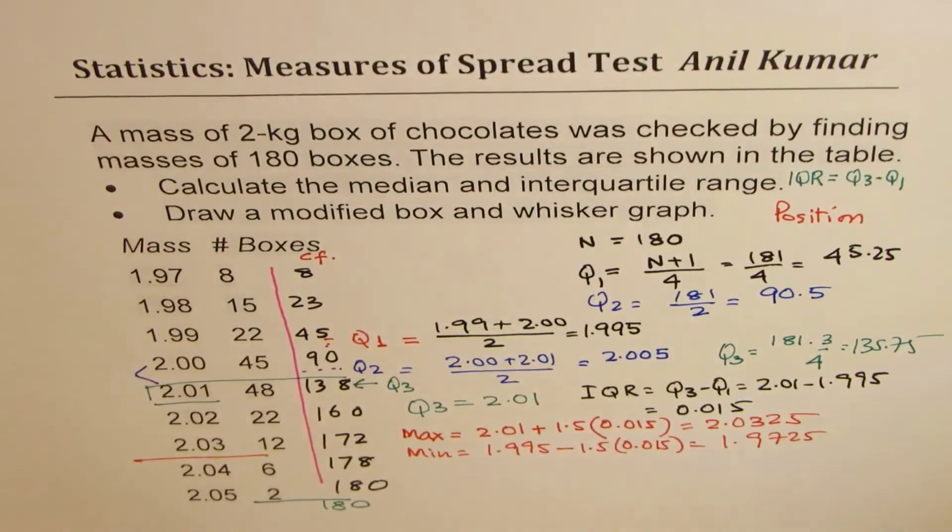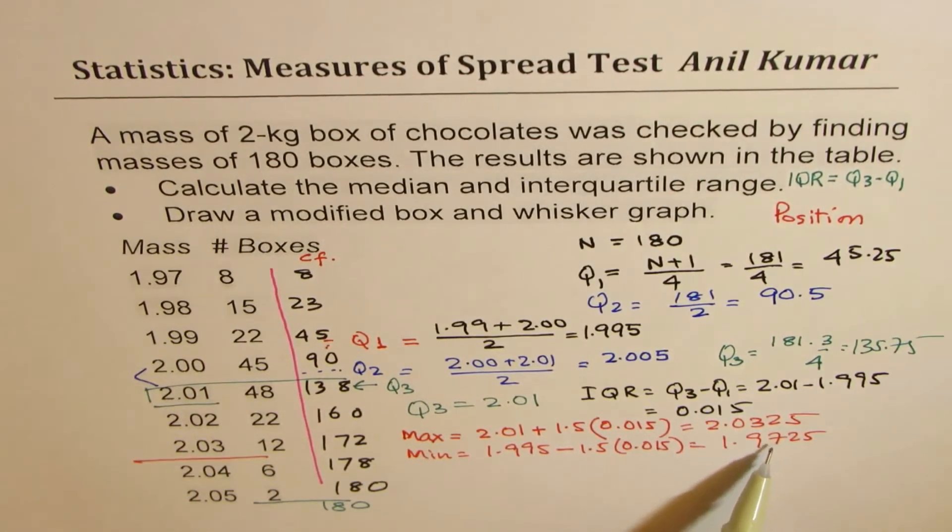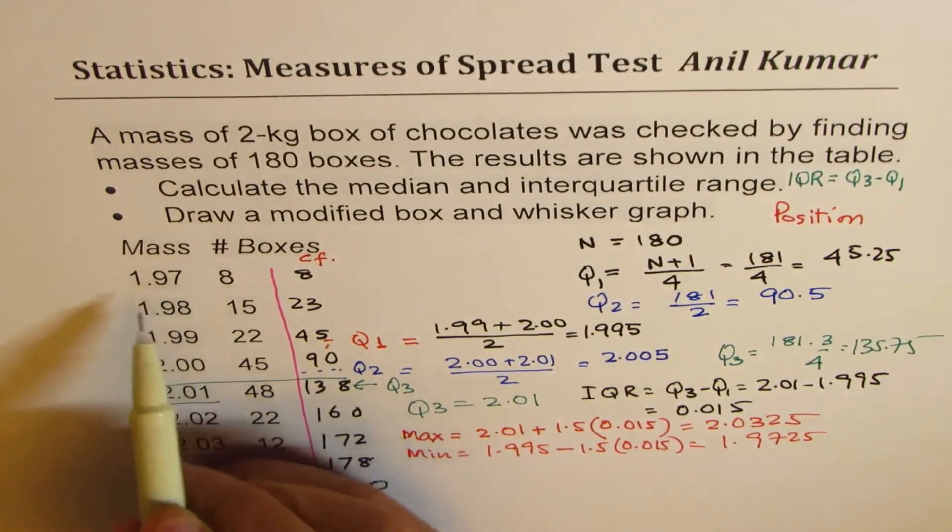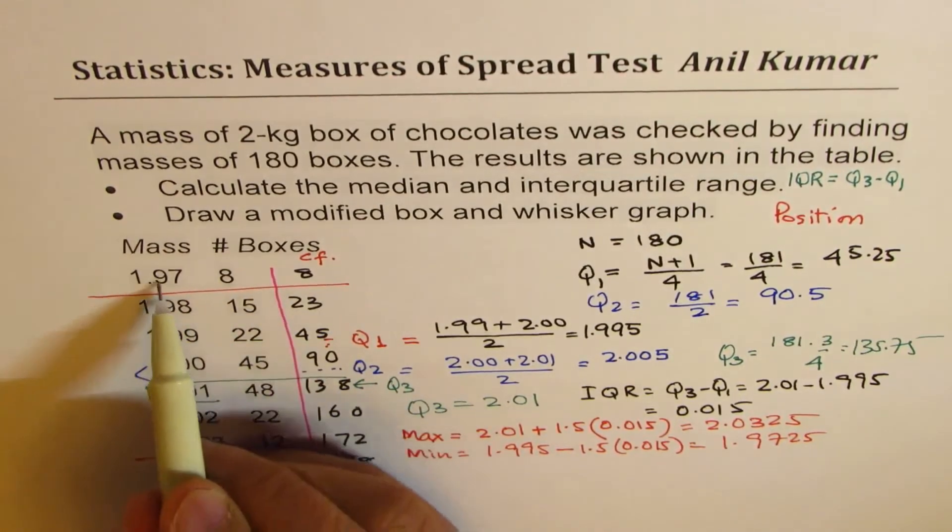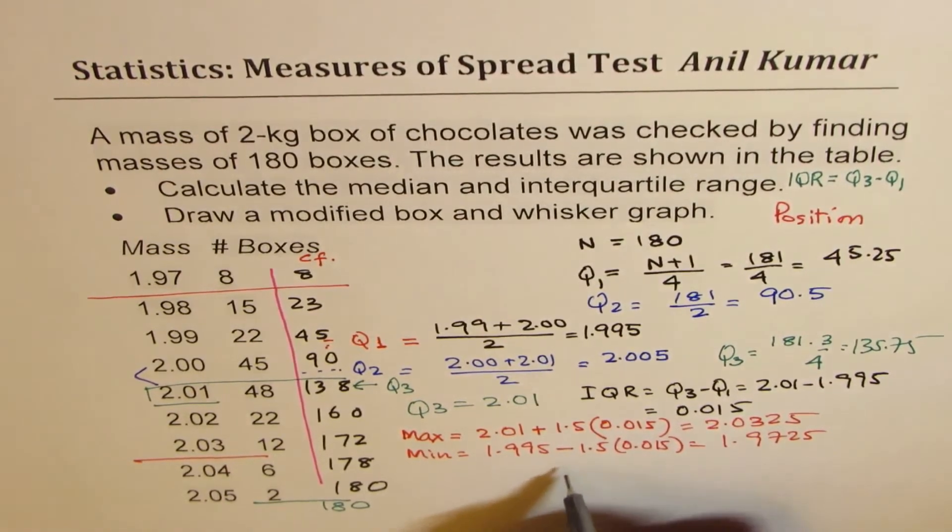Okay, 1.9725 is least you could go, so that means less than 1.9725 is not there, so that's the end of it. So that becomes an outlier. Now with all this, now let us sketch it.